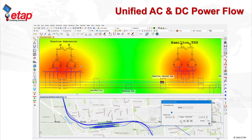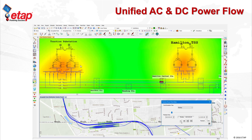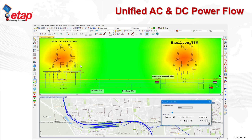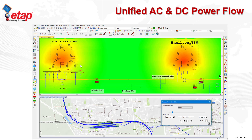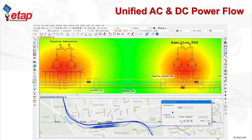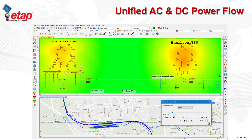You can also apply color contouring and view the movement of the train directly on the geospatial and one-line diagram. The color contouring allows you to see the impact of the train's start, stop, and regeneration directly into the system. The red color represents an under-voltage condition, whereas green represents a nominal operating system.